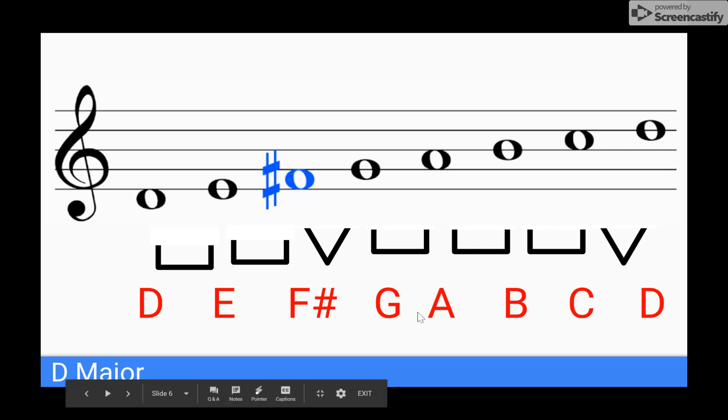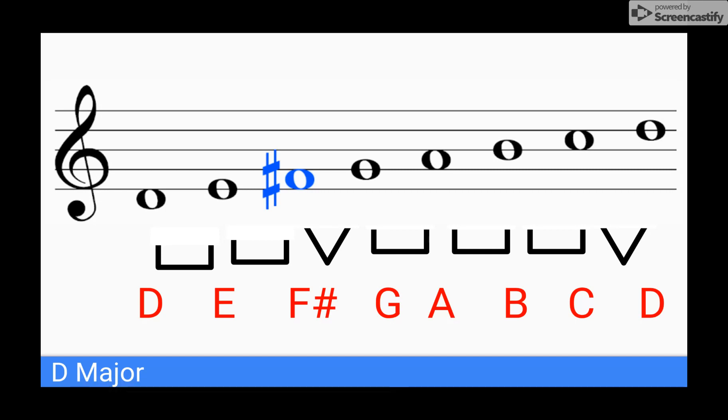Now I need another whole step between G and A. If I consult the keyboard, I see that I do in fact have a whole step between G and A. I'm going to move on. Between A and B, I need another whole step. If I consult my keyboard, I see that I do in fact have that whole step.